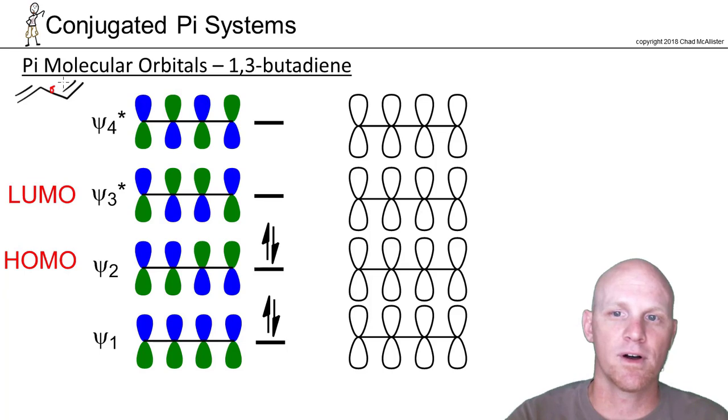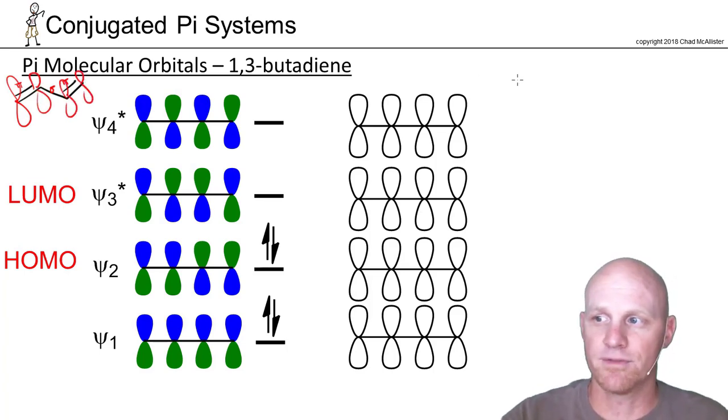So we've got one sigma bond in between two sets of pi bonds. You should also realize that we've got one, two, three, four p-orbitals involved. And so with four p-orbitals involved, when you combine four orbitals, it turns out there's four different ways you can combine them.